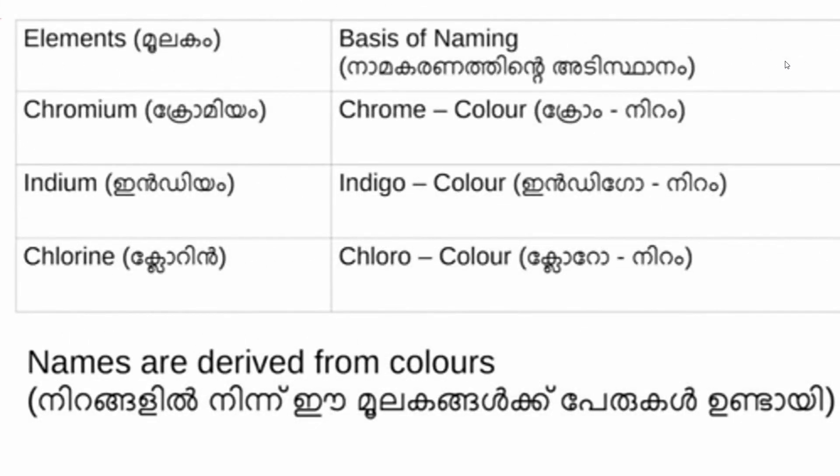In the next table, Chromium is derived from 'chromium' meaning color. Indium is derived from 'indigo', which is a color. Chlorine is derived from 'chloro', meaning color. These names are derived from colors.